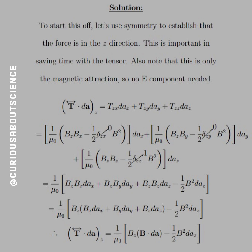In the z-z term, the Kronecker delta goes to 1 since the indices are the same. So B_z B_z gives us B_z-squared minus B-squared, though the contributions from B_zx and B_zy make up for that later. Factoring out 1/mu-naught, we get B_z B_x dA_x plus B_z B_y dA_y plus B_z B_z dA_z minus one-half B-squared dA_z. Since all the left terms have a z component, we left-factor that out, leaving B_x dA_x plus B_y dA_y plus B_z dA_z, which equals B·dA. That is awesome.